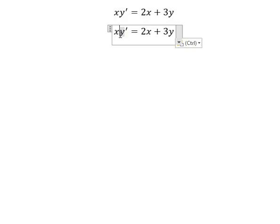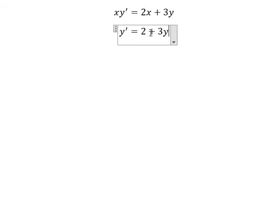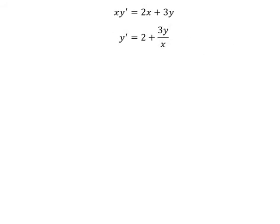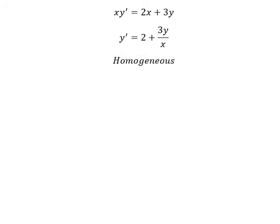We divide both sides by x. We have y over x. That means we can use a homogeneous method. So we can put the substitution y equal to vx.